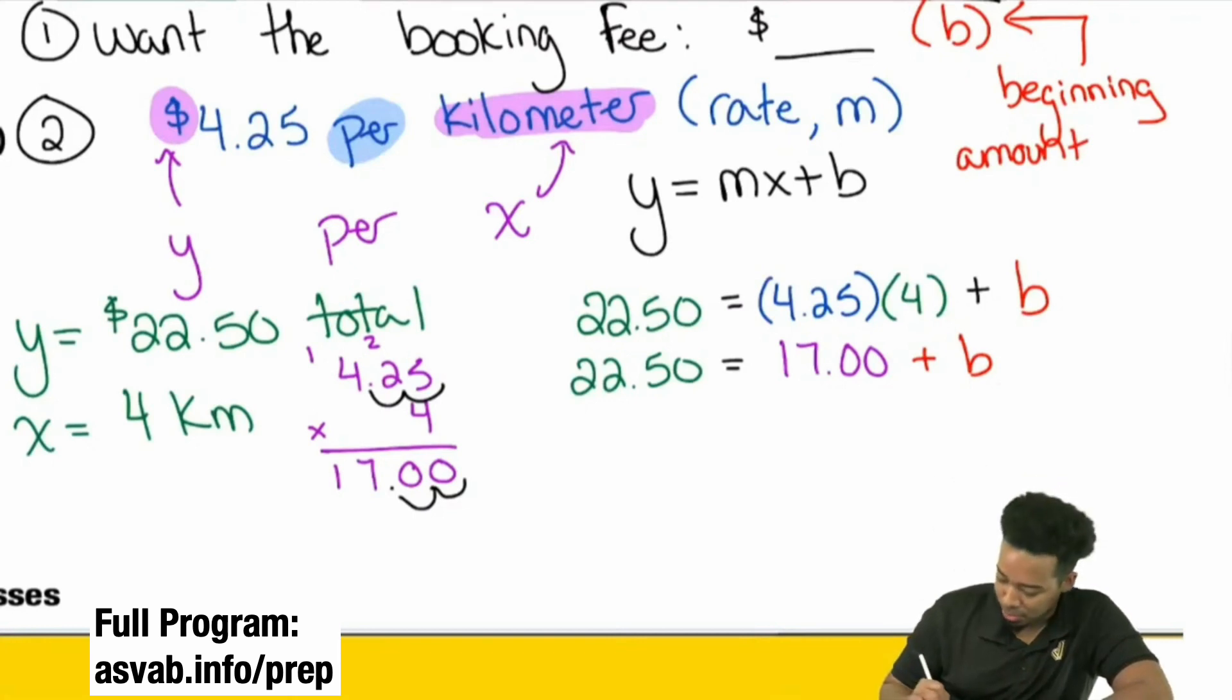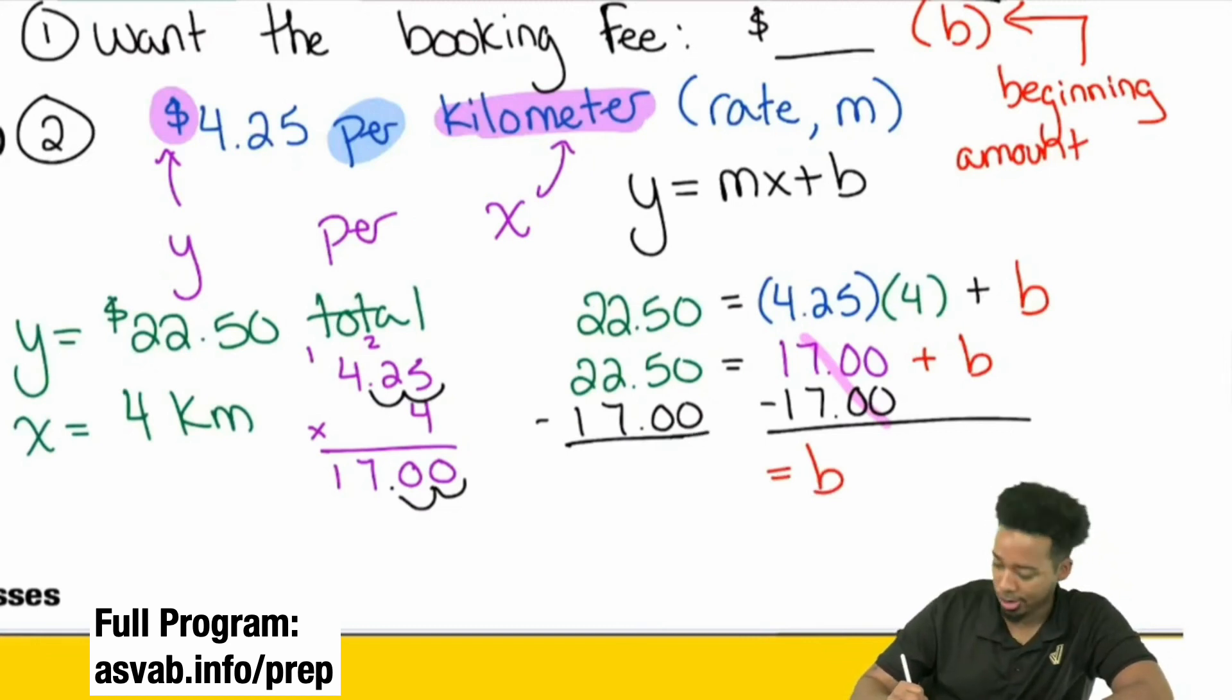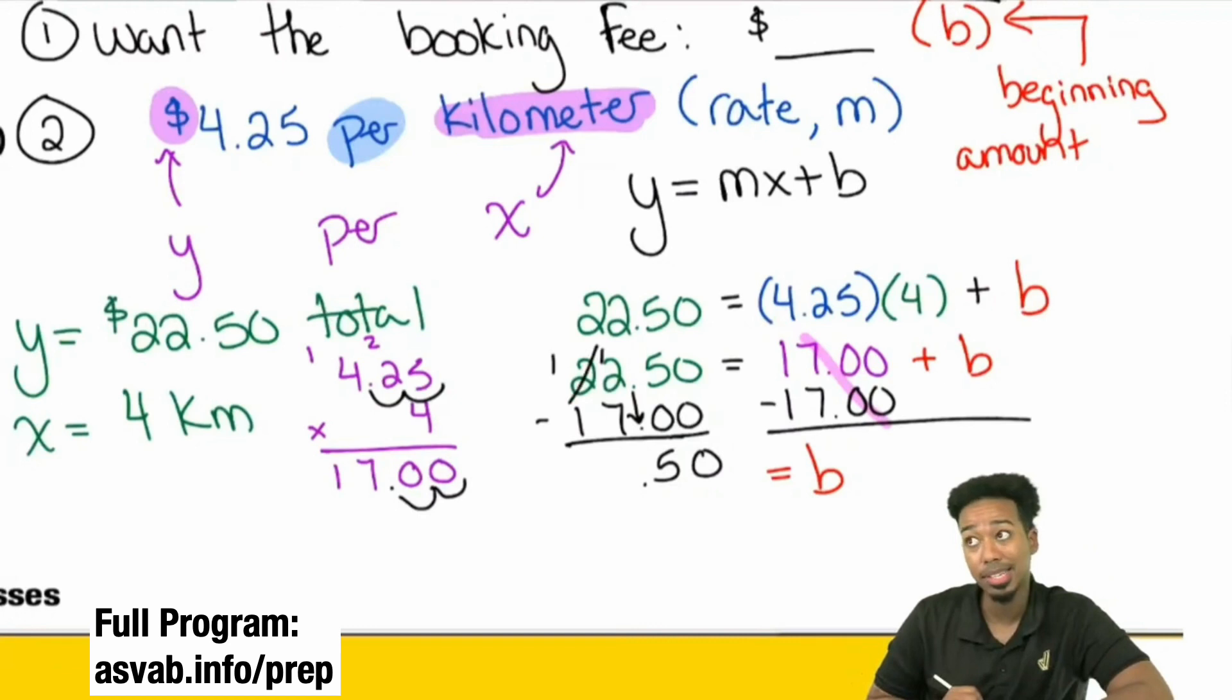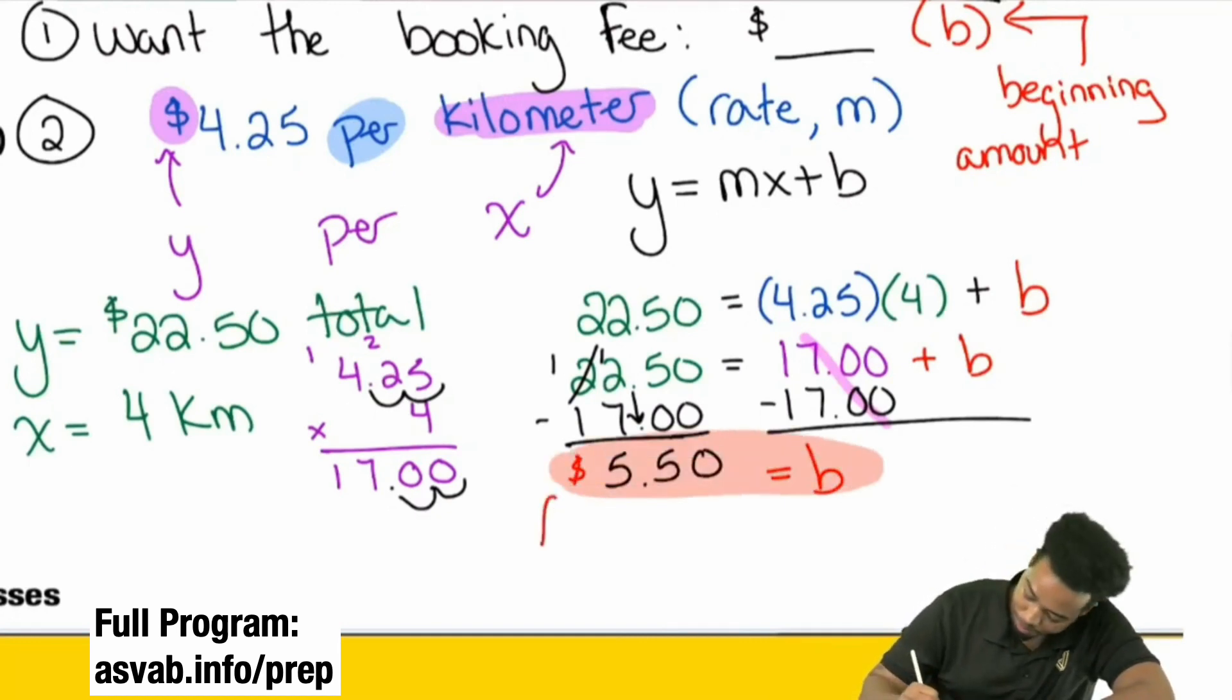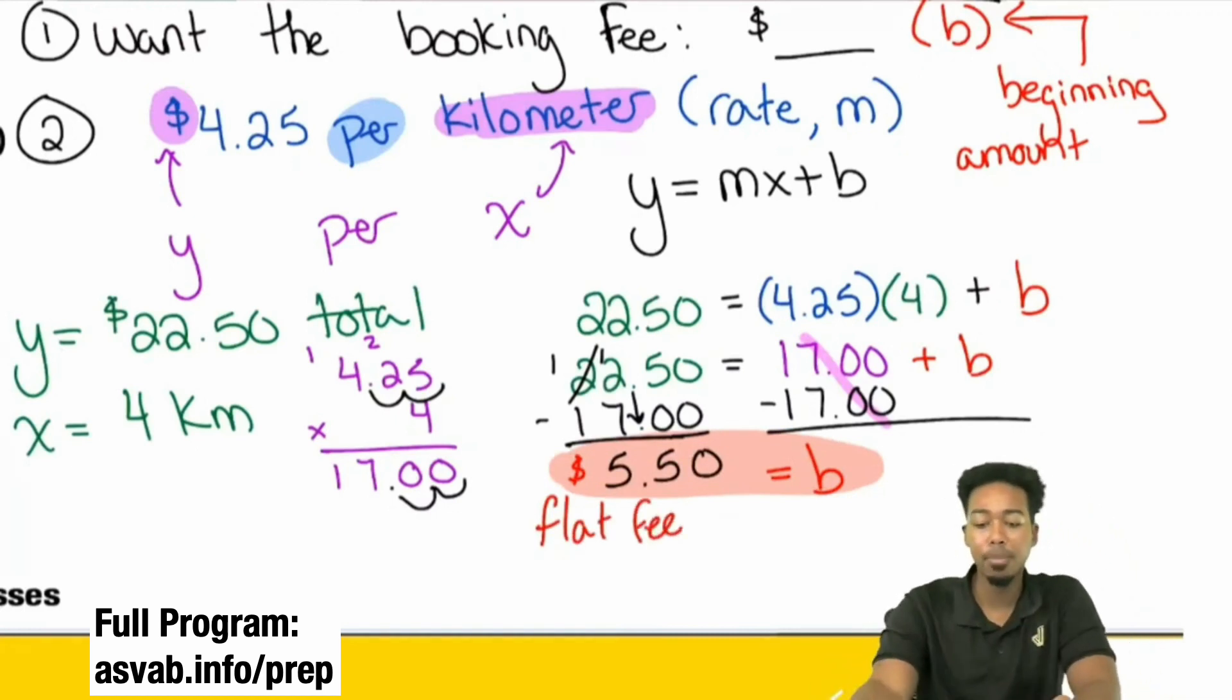So, let's figure out what that flat fee is by subtracting from both sides. You can definitely use that mental math too. So, here we'll take care of the rest of business here. Subtract $17 on both sides. That's going to cancel on the right side, leaving us with B equals, well, let's find out. 0 minus 0. 5 minus 0. Bring the decimal down. Remember when you are adding and subtracting the decimals, keep the decimals lined up. 2 minus 7. I can't do that. 12 minus 7. That's going to be 5. So, we have 5.50 equals B. And that, my friends, that's our flat fee. That's our flat fee before getting into the taxi, before actually driving. That's our flat fee.